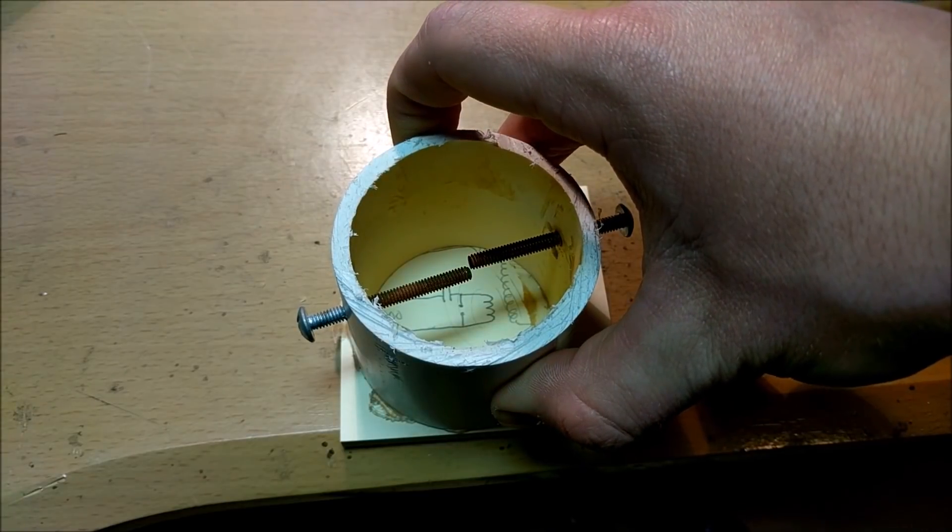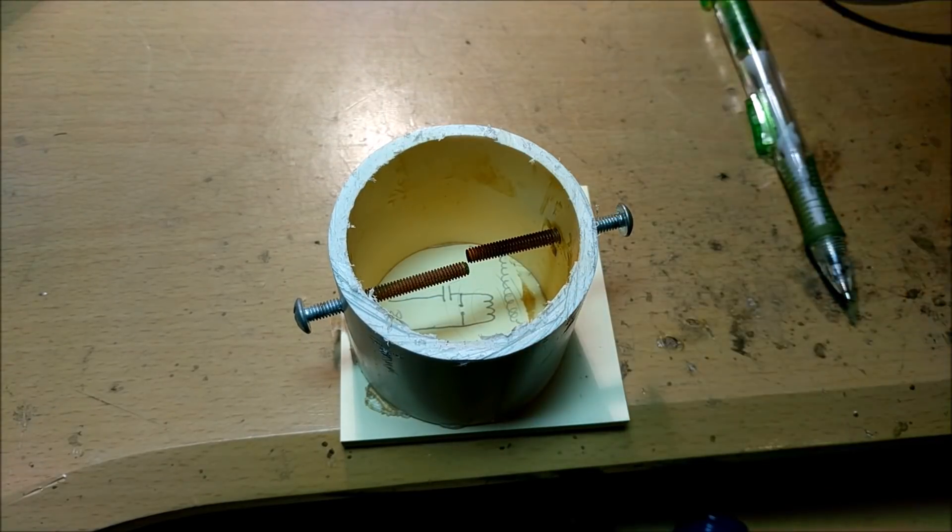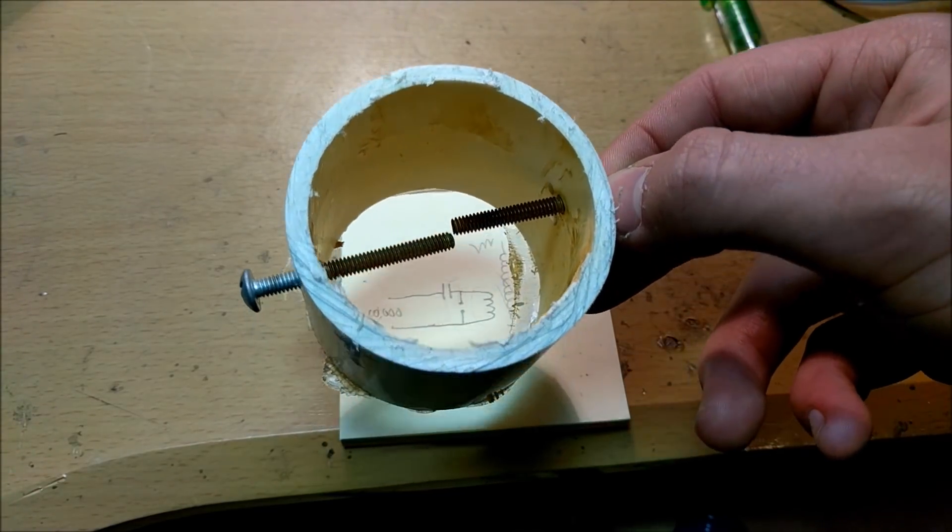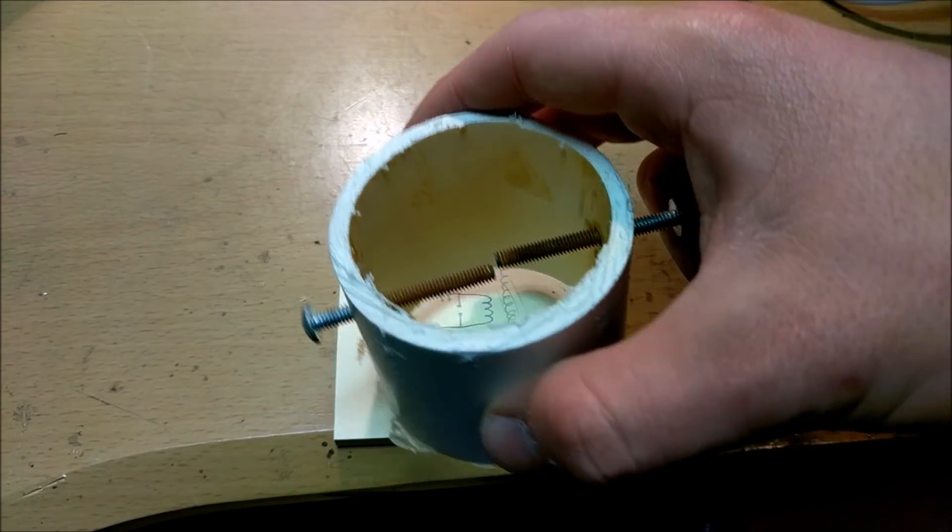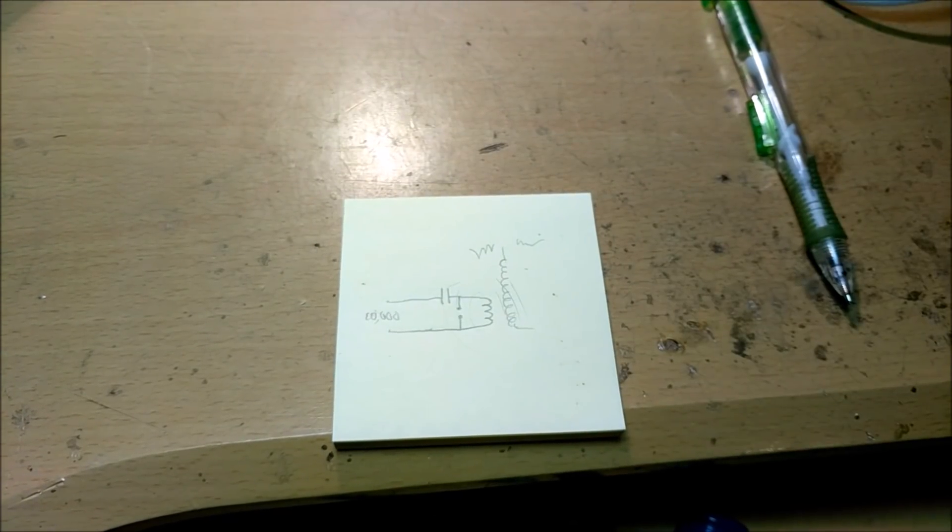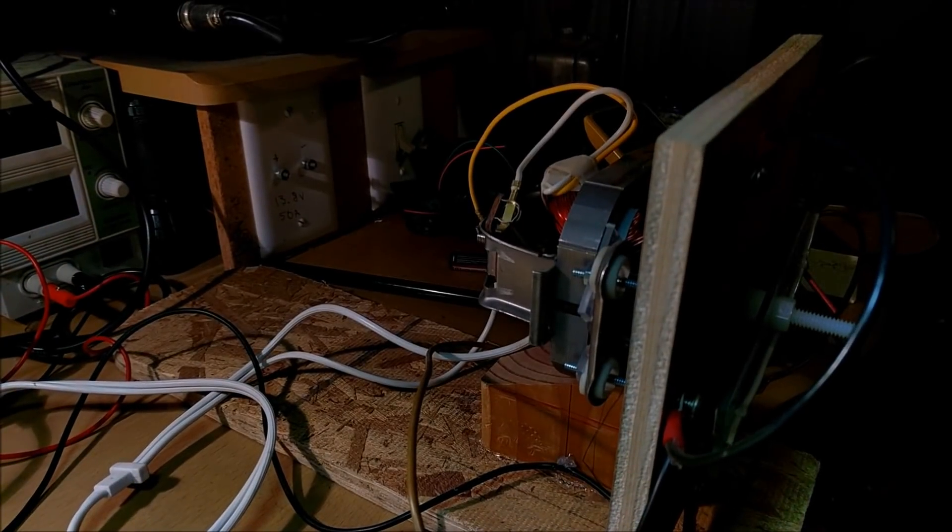Now, this you can't easily adjust, especially while it's running. You have to turn off the Tesla coil, discharge the high voltage power supply, twist the screw, turn it on, and see what happens. I don't like that. So, that's why I use a rotary spark gap.